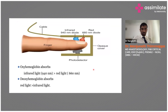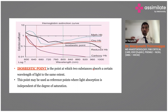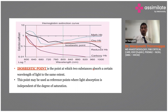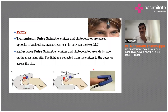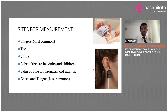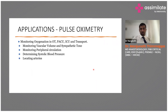Oxyhemoglobin absorbs infrared light more, while deoxyhemoglobin absorbs red light more. Based on this, we get the waveform, and the pulse oximeter sound volume also changes according to SpO2. There is something called the isobestic point, where two substances absorb a certain wavelength of light equally. There are two types: transmission and reflectance pulse oximeters. Measurement sites include fingers, toe, ear pinna and lobe in adults, and palm, cheek, and tongue in children. Applications include monitoring oxygenation, vascular volume, and sympathetic tone.